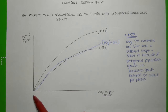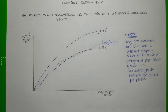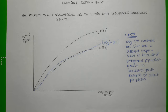In other words, as output per person increases at a decreasing rate, and as in the economy individuals save a constant portion of that output per person, which is growing at a decreasing rate, so too does savings grow at a decreasing rate.